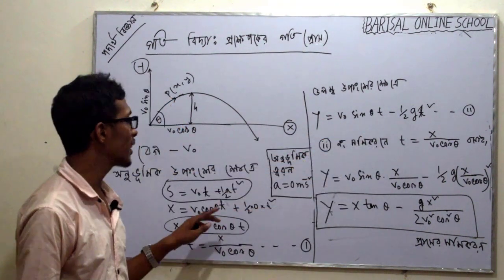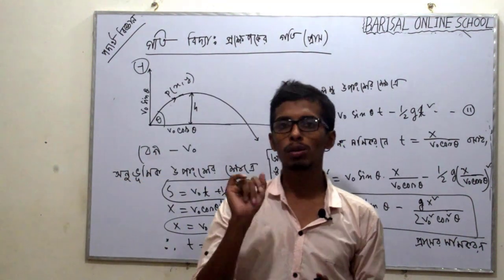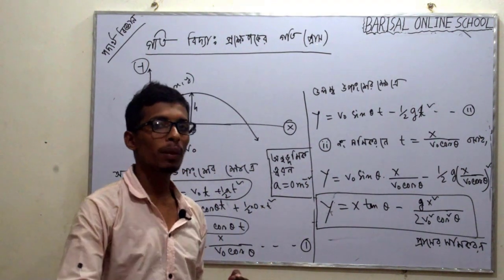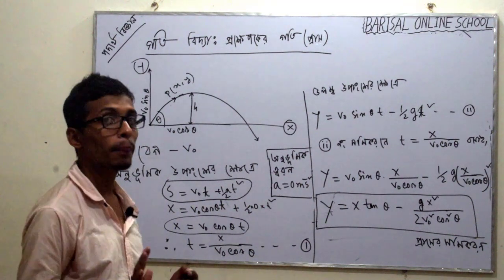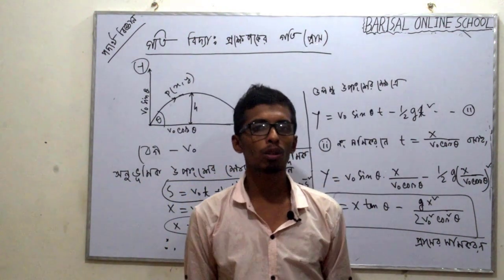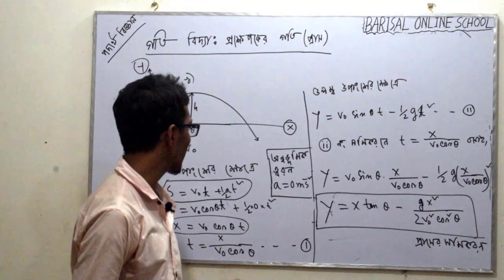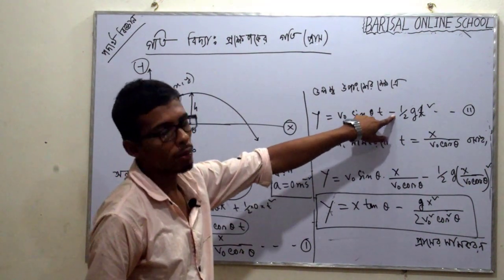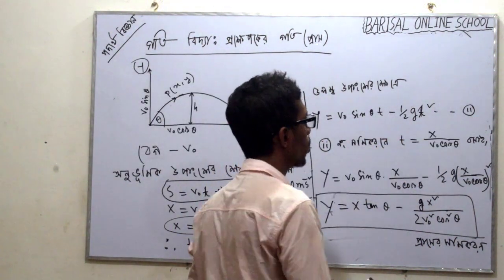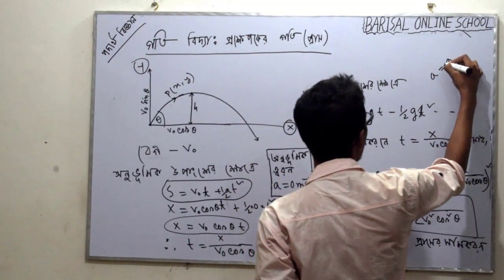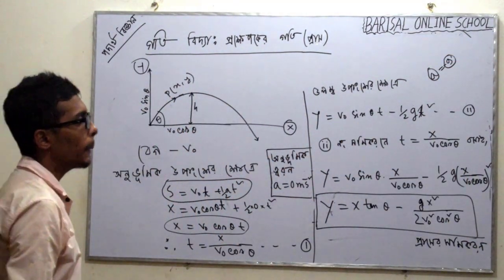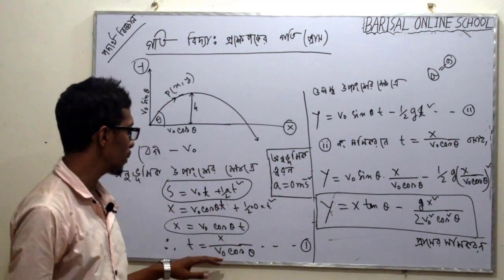In the opposite direction of the object's motion, the object decelerates. We know that when an object moves upward, it experiences deceleration. The acceleration acts downward, opposing the upward motion, so acceleration equals minus g.